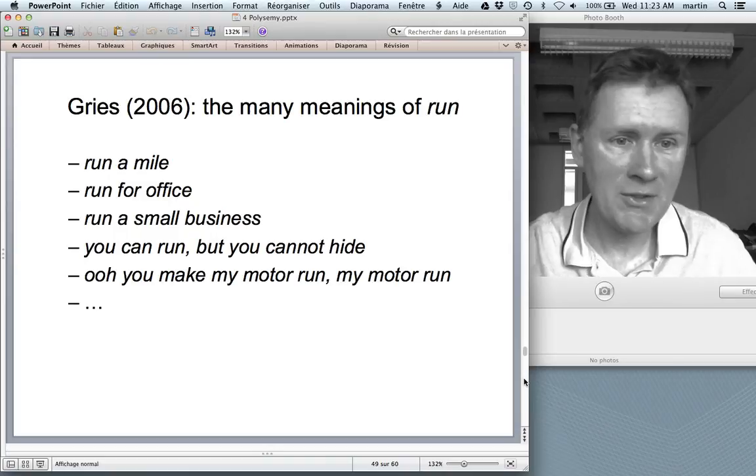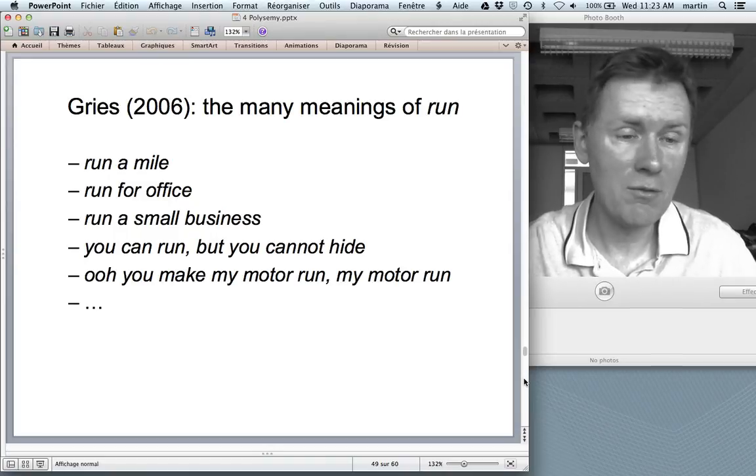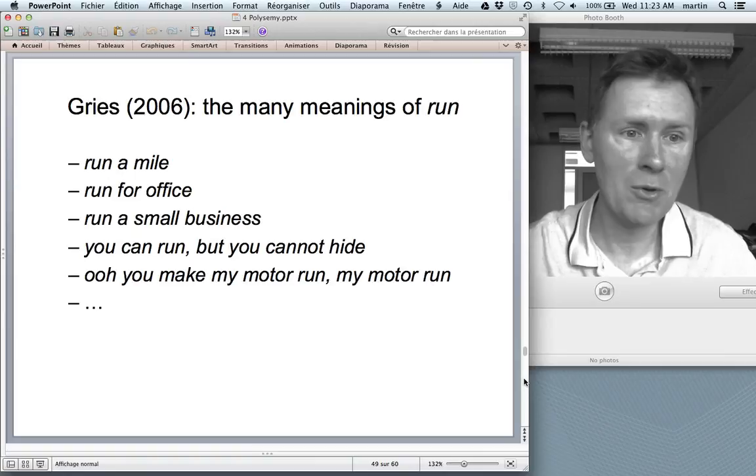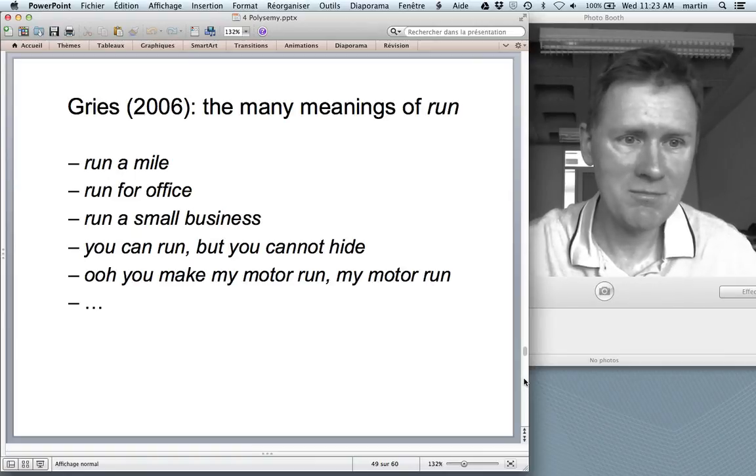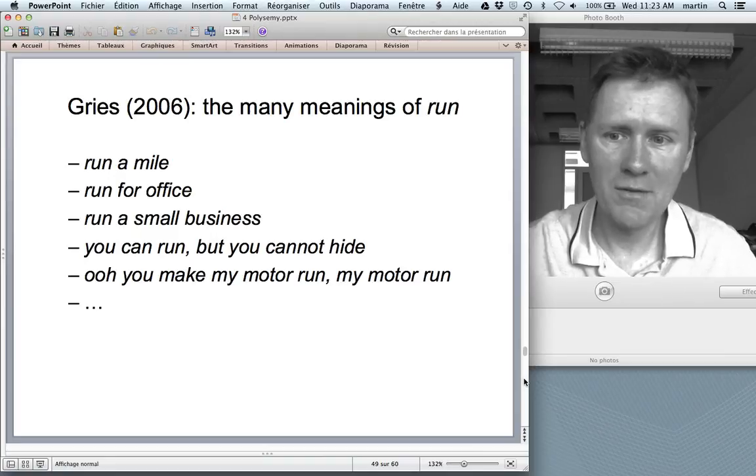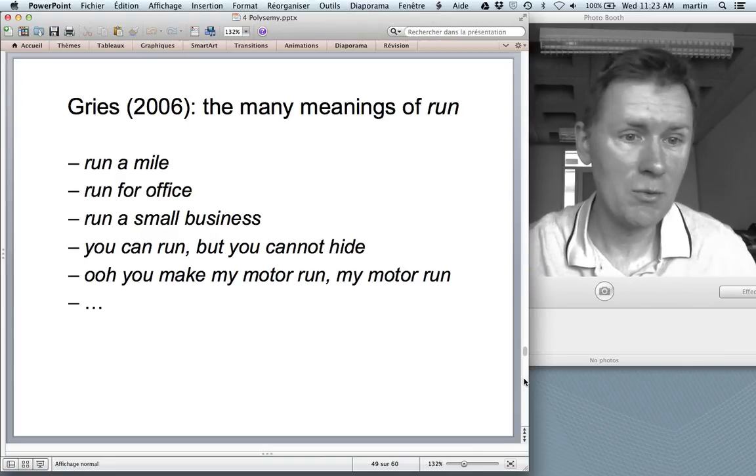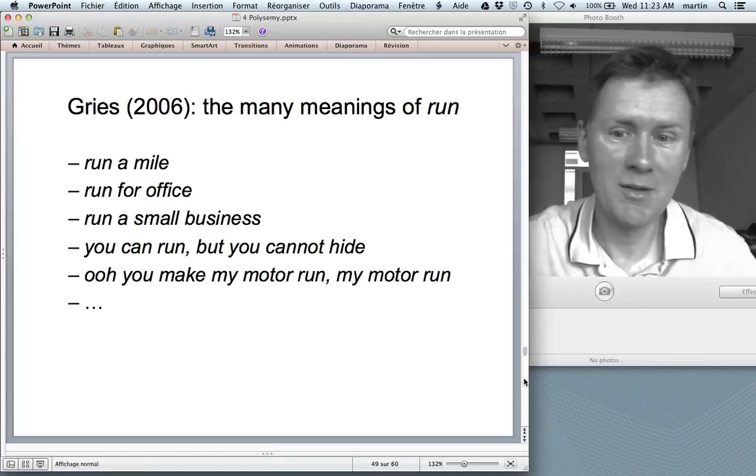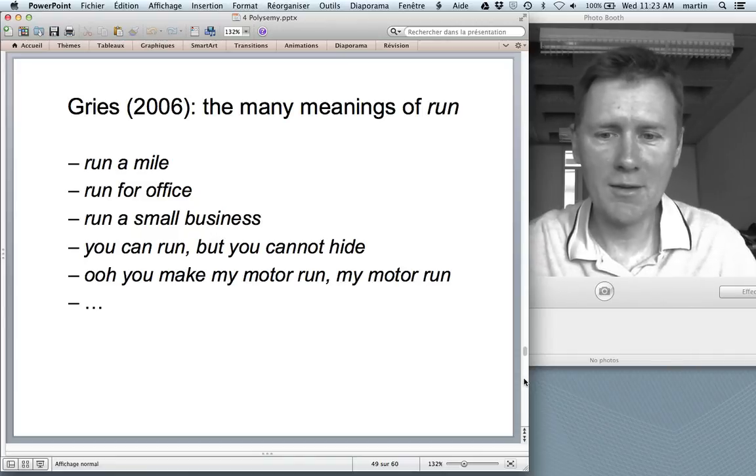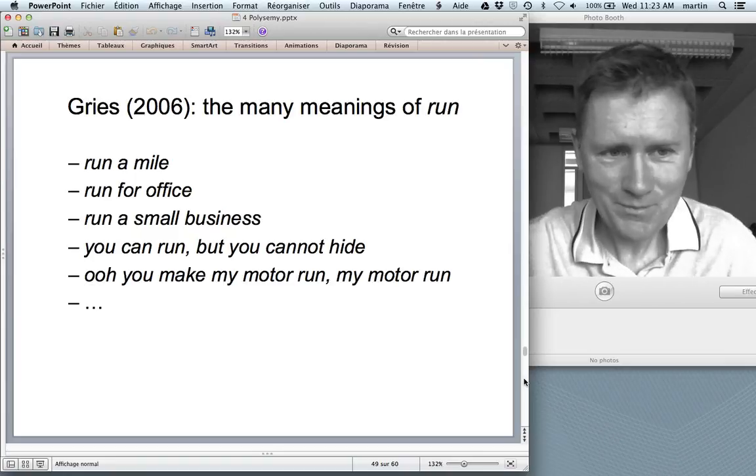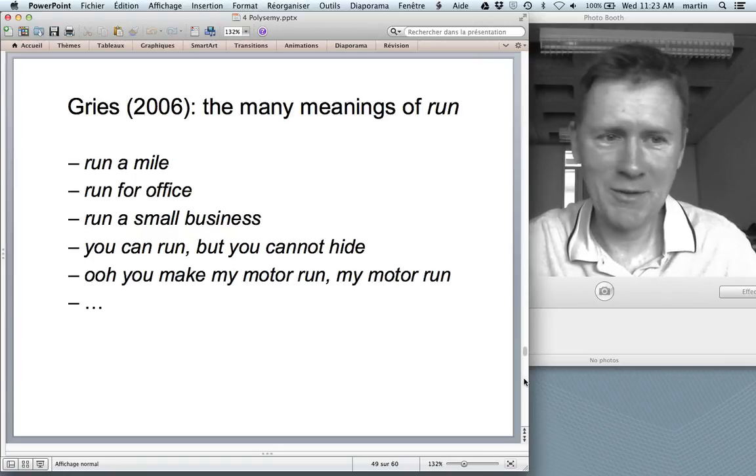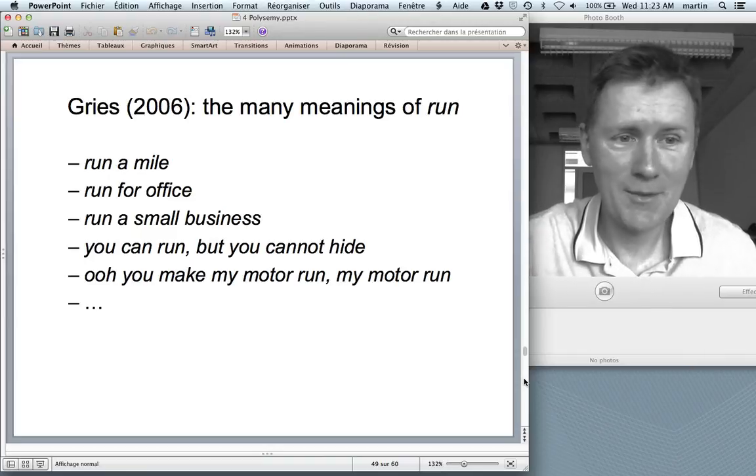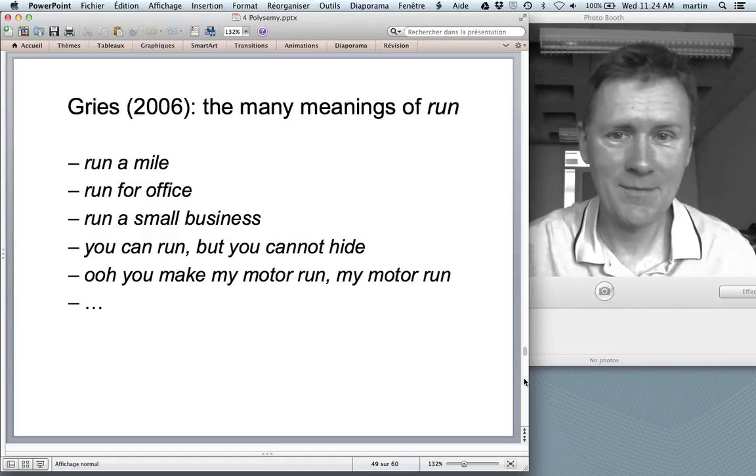And this, you can actually turn to your advantage in a corpus-linguistic analysis of polysemous items. So, one study that I want to mention to you is Stefan Gries' study of run, the English verb, which has a lot of different meanings. You can run a mile, that's fast pedestrian motion. You can run for office, meaning you're a candidate for some kind of political office. You can run a small business, meaning that you're responsible for that business. Run can mean try to get away. You can run, but you cannot hide. And run has a number of metaphorical meanings. A motor can run, but that means the motor is functioning, not that it is going anywhere on feet.